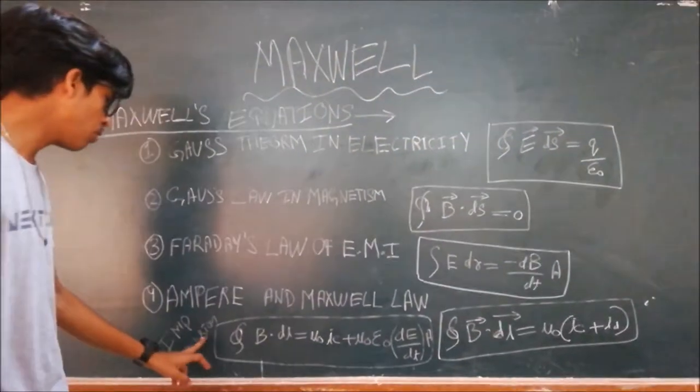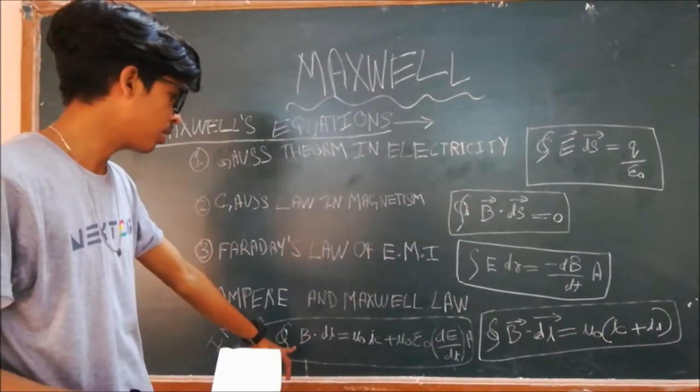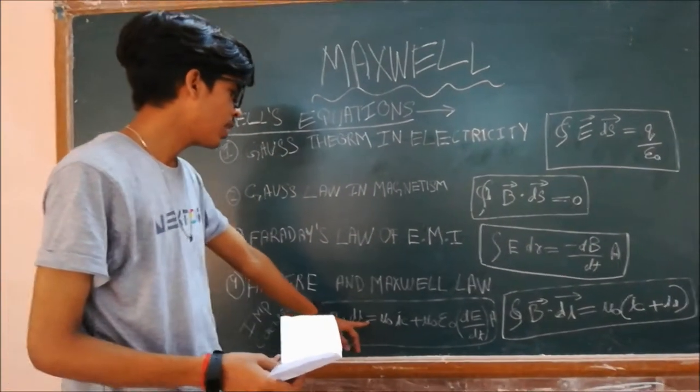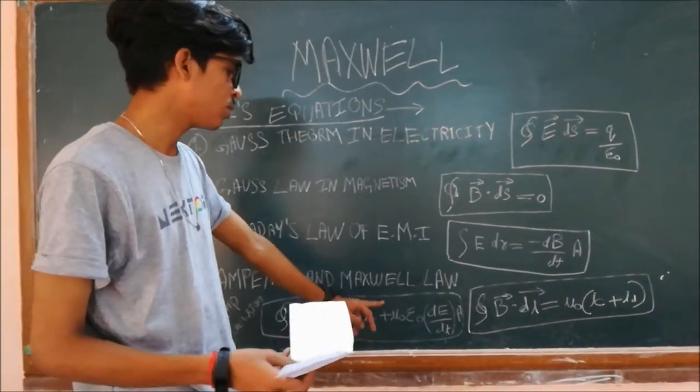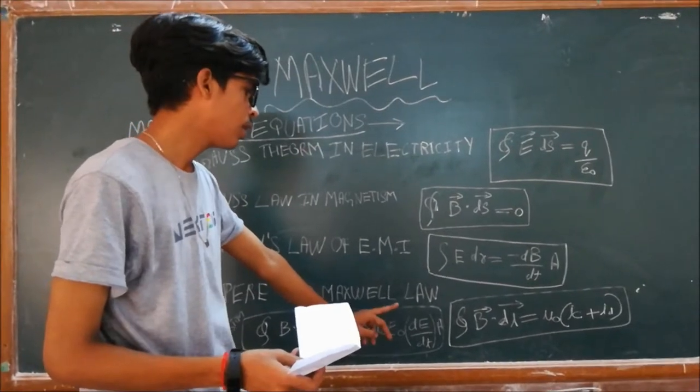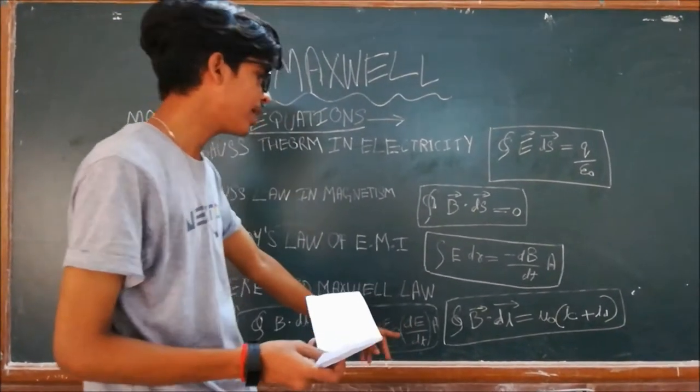The important conclusion of the fourth equation is given by this. That is ∮B·dl is equal to μ₀Ic plus μ₀ε₀ into dE/dt·A.